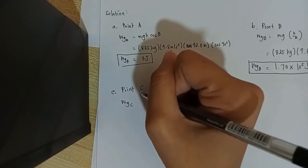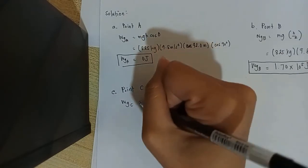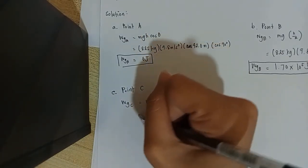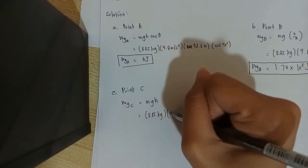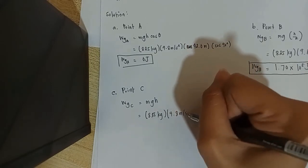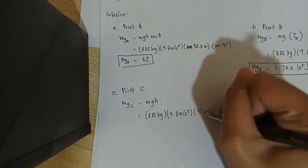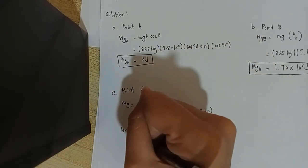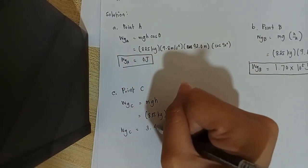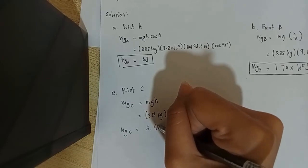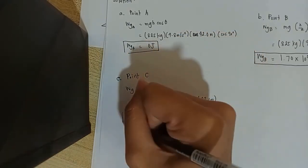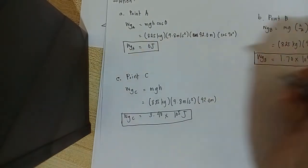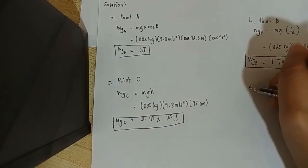Letter C. Point C. Our formula would be mgh. That will be 8.25 kilograms multiplied by 9.8 meters per second squared. Our height would be 42.0 meters. So our work at point C is equal to 3.40 times 10^5 joules.